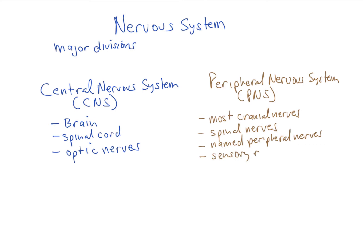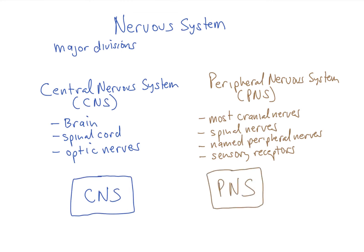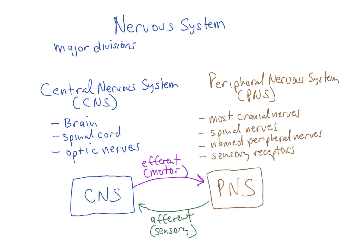If we look at the flow of information from the CNS to the PNS, that's called efferent or motor. If information is going from the PNS to the CNS, that's afferent or sensory information.